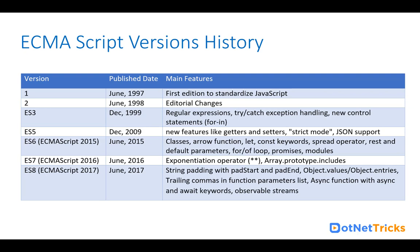Then we have ECMAScript 2017, or ES8, released in June 2017. With ES8, we have string padding with padStart and padEnd, object values and object entries, trailing commas in function parameter lists, async functions with async and await keywords for asynchronous programming, and observable streams as well.